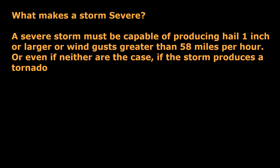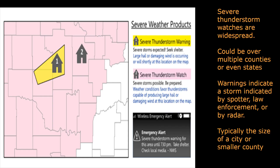So as we're getting nearer to spring, let's go over one more time general thunderstorm safety tips. First though, what makes a storm severe? A severe storm must be capable of producing hail one inch or larger, with wind gusts greater than 58 miles per hour, or if neither of those are the case, if the storm produces a tornado, that automatically makes it severe. Severe thunderstorm watches are widespread — they could be over multiple counties or even states. Severe thunderstorm warnings indicate that a storm has been spotted by law enforcement, radar, or a storm spotter themselves. Severe thunderstorm warnings are typically the size of a city or of a smaller county.